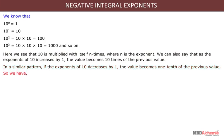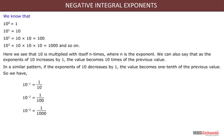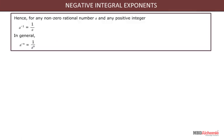In a similar pattern, if the exponents of 10 decrease by 1, the value becomes one tenth of the previous value. So we have 10 to the power minus 1 is equal to 1 upon 10, 10 to the power minus 2 is equal to 1 upon 100, and 10 to the power minus 3 is equal to 1 upon 1000. Hence, for any non-zero rational number a and any positive integer n, a to the power minus 1 is equal to 1 upon a, and in general, a to the power minus n is equal to 1 upon a to the power n.